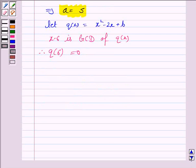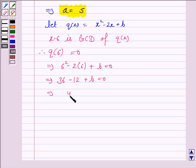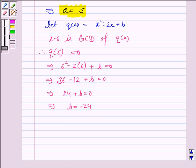So, we have 6 squared minus 2 into 6 plus b is equal to 0. So, this implies 36 minus 12 plus b is equal to 0. So, this implies 24 plus b is equal to 0. So, this implies b is equal to minus 24.